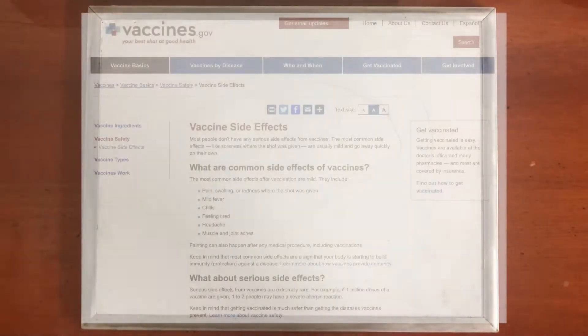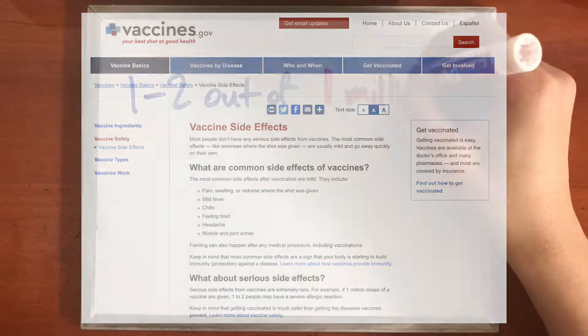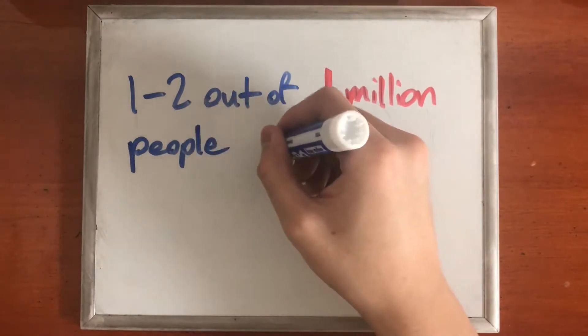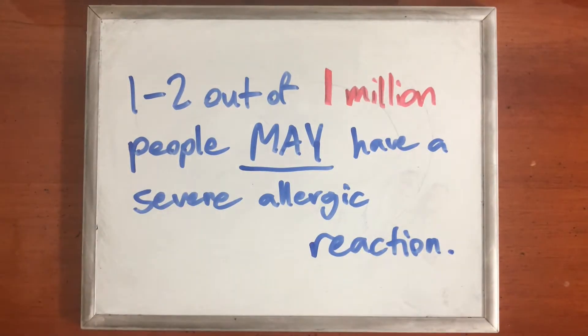According to Vaccines.gov, serious side effects from getting vaccinated are extremely rare. For example, if one million doses of a vaccine are given, only two people may have a severe allergic reaction to it.